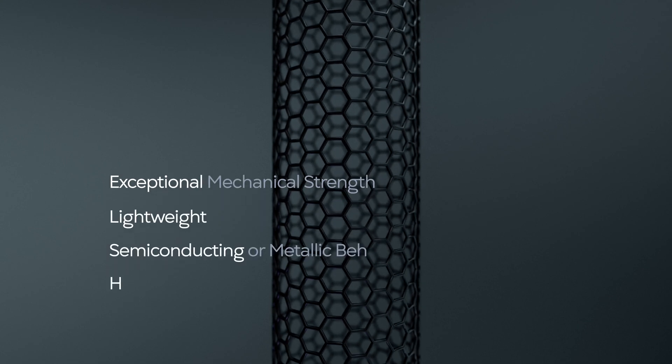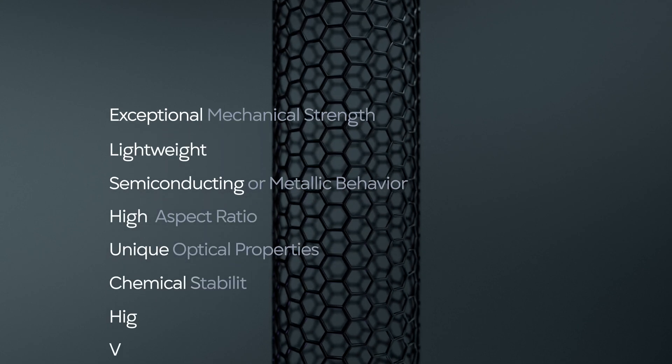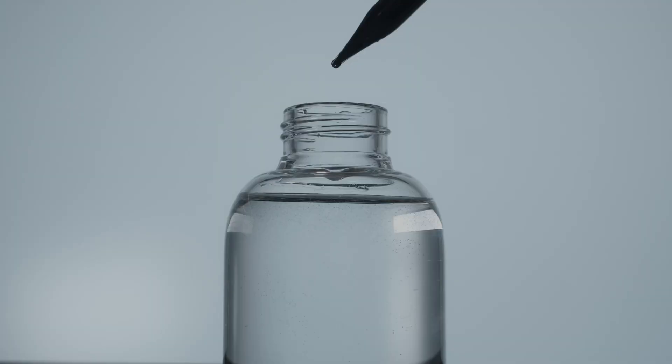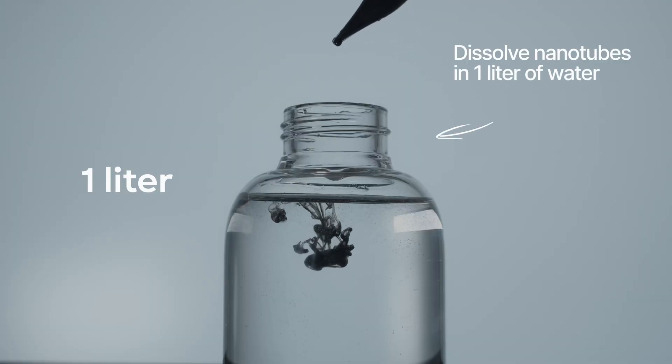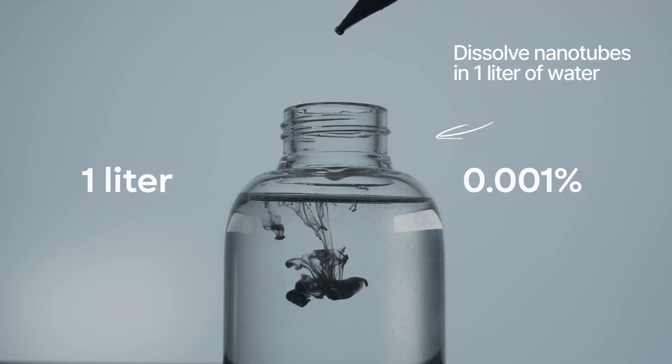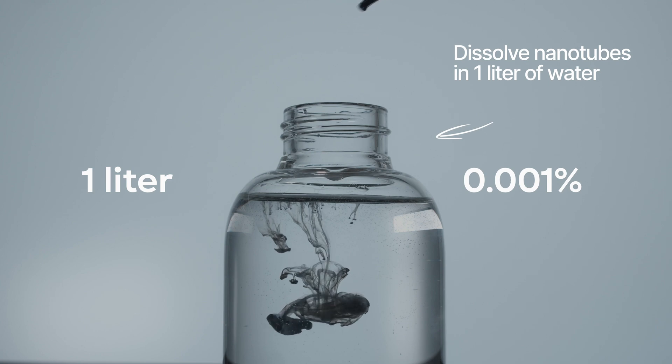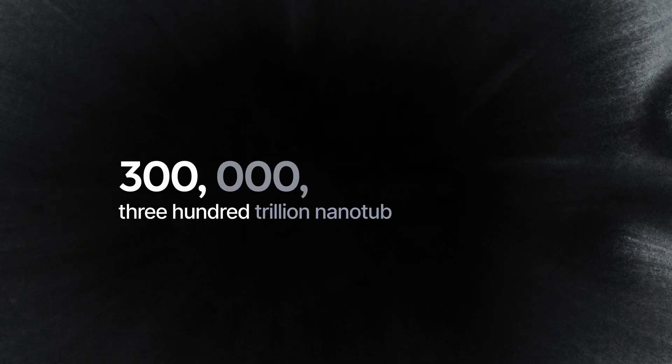If we take nanotubes even a little bit by mass, there will still be billions and billions of them. For example, if we take a liter of water and just add 0.001 percent of nanotubes, there will be 300 trillion of them in that liter.